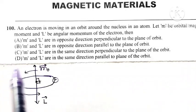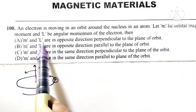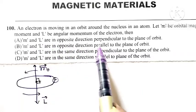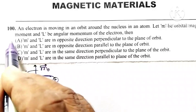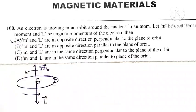Opposite in direction. Look at option A: m and L are opposite in direction and perpendicular to plane of orbit. So the first option is the correct answer for this question.